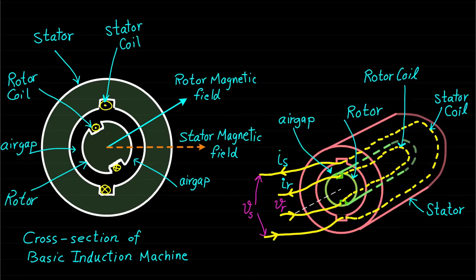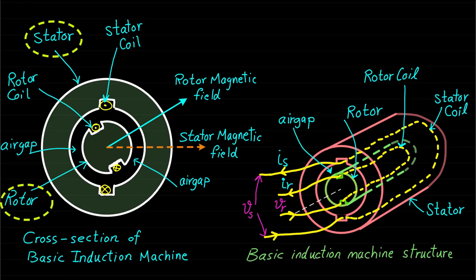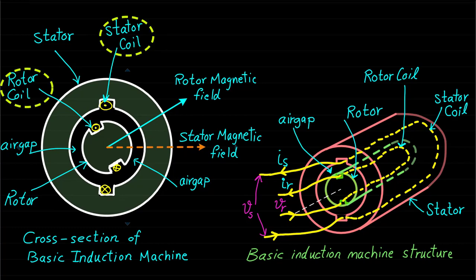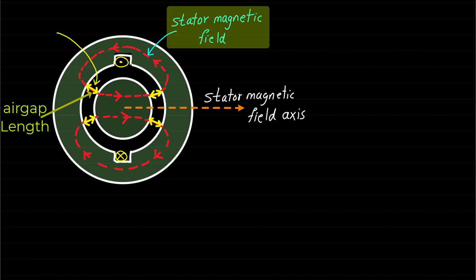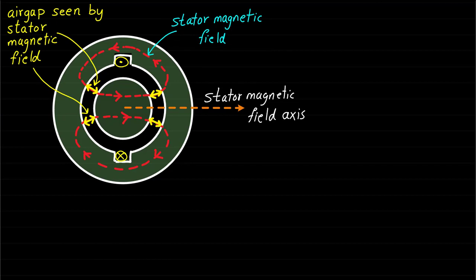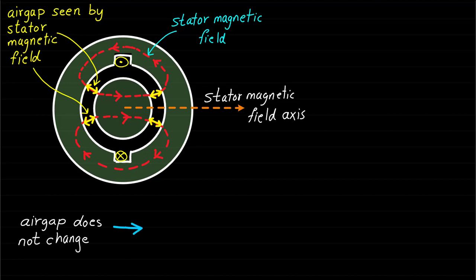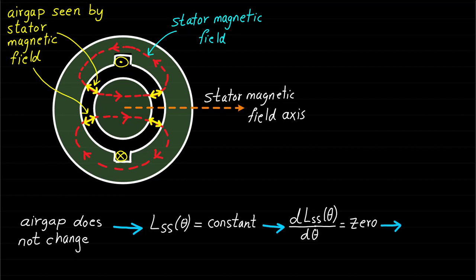Let's take an example. This cross-section figure represents a cross-section of a basic induction machine structure where the stator and rotor have cylindrical structure. The stator and rotor have excitation coils as shown. Let's remove the rotor coil to investigate the stator self-inductance. It is very clear that the air gap length seen by the stator magnetic field path does not change with respect to rotor position because the air gap is uniform. Since the air gap does not change with respect to the rotor position, the stator self-inductance LSS of theta will be constant. Therefore, the rate of change of the stator self-inductance is zero. So this machine does not develop torque component due to the stator self-inductance.